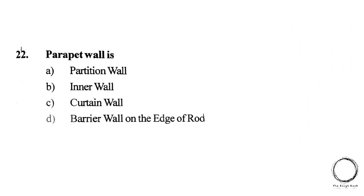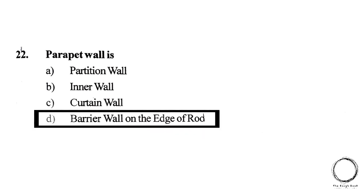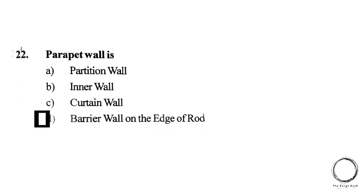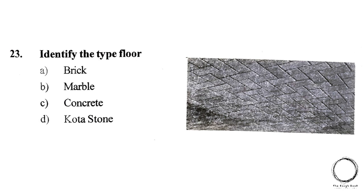Next question: A parapet wall is — A) Partition wall, B) Inner wall, C) Curtain wall, D) Barrier wall on the edge of the road. The answer is D) Barrier wall on the edge of the road. Next question: Identify the type of floor from the picture. Options: A) Brick, B) Marble, C) Concrete, D) Quota stone. The answer is A) Brick.